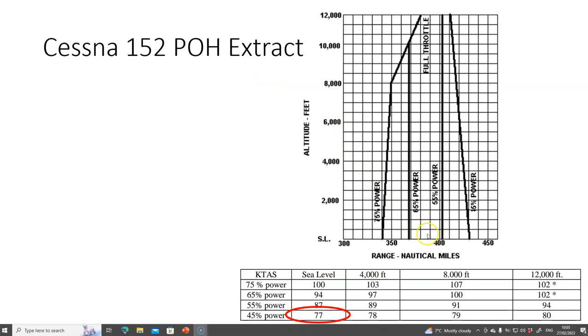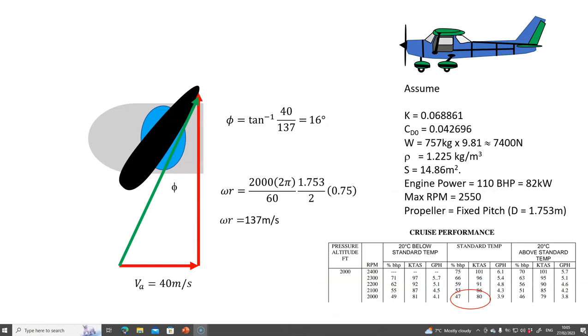When I look at the pilot operating handbook again, the maximum range occurs at I think 45% power at sea level, that's about 77 knots. Everything indicates that the value I calculated of 47% at 82 knots is a ballpark figure and gives me a degree of confidence in the numbers.